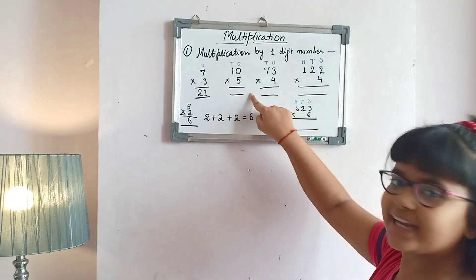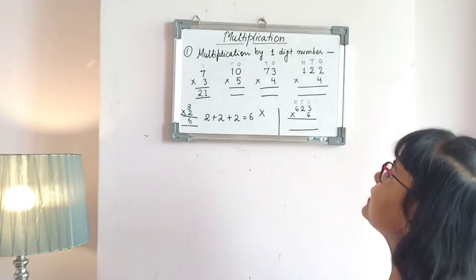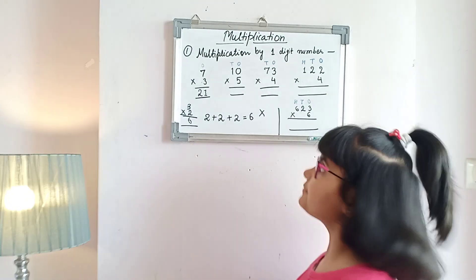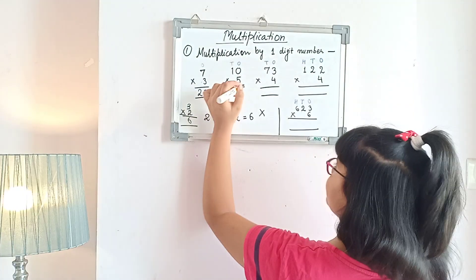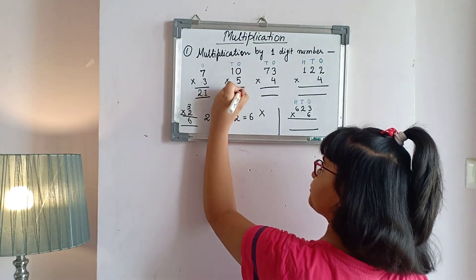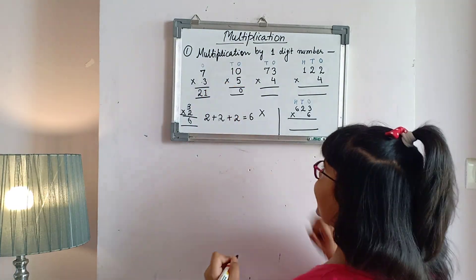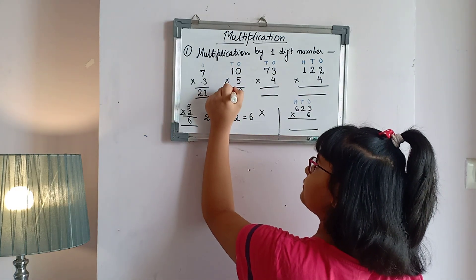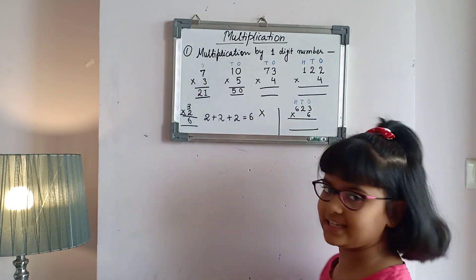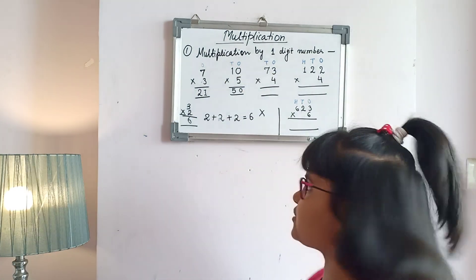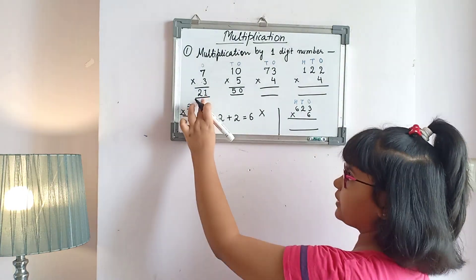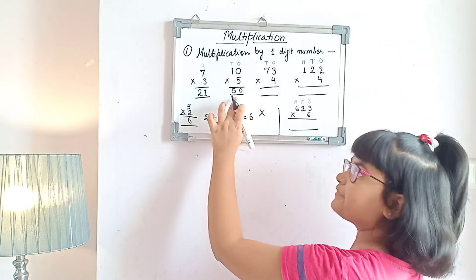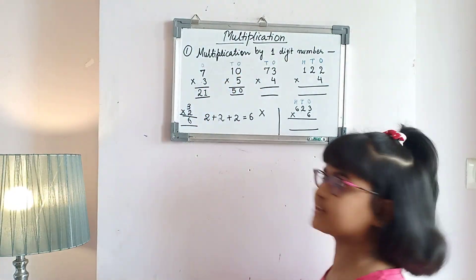Now let's go to the second question. It is 10 multiplied by 5. So we will do: 5×0 is 0, and 5×1 is 5 — meaning 50 is the answer. So 21 is the product of the first question and 50 is the product of this question.